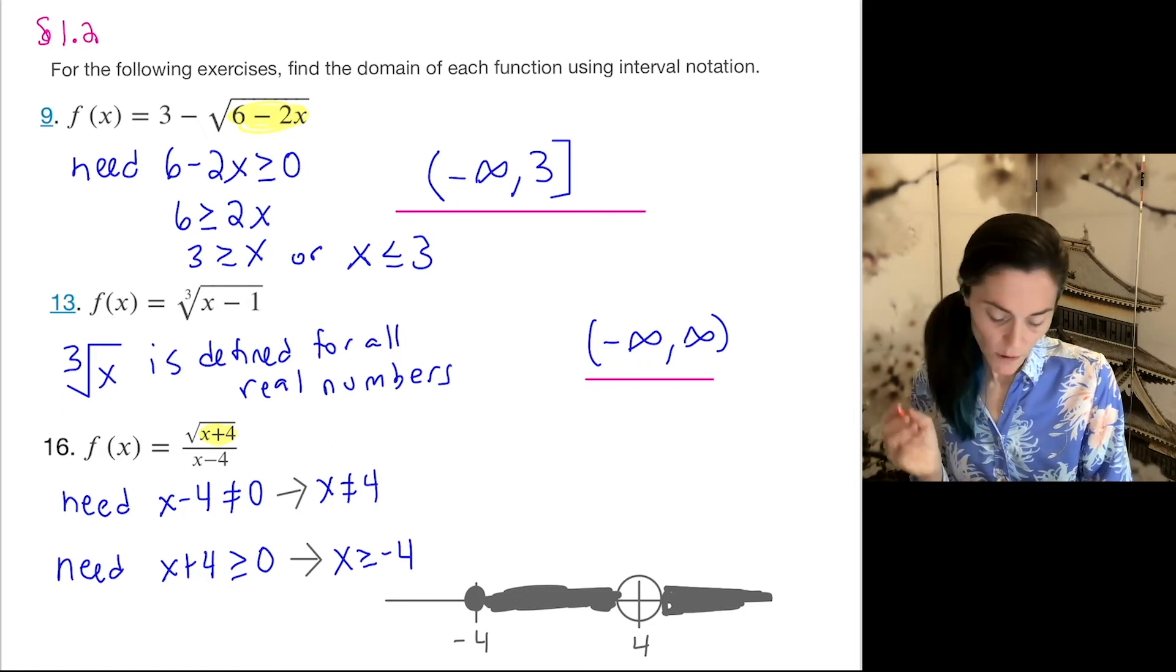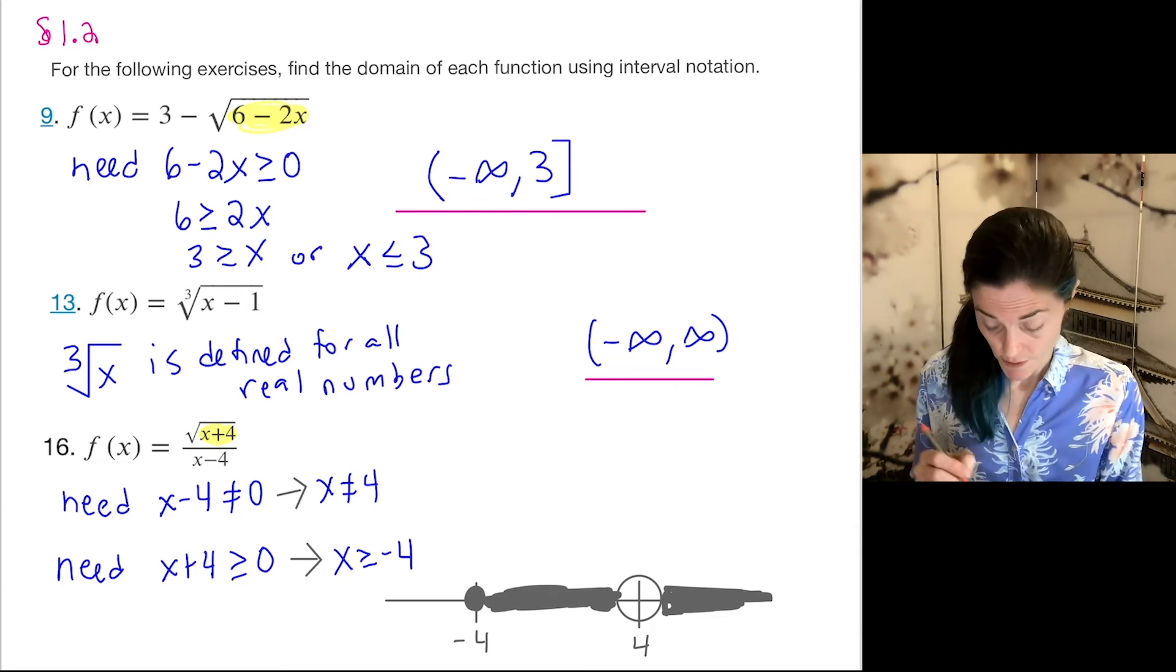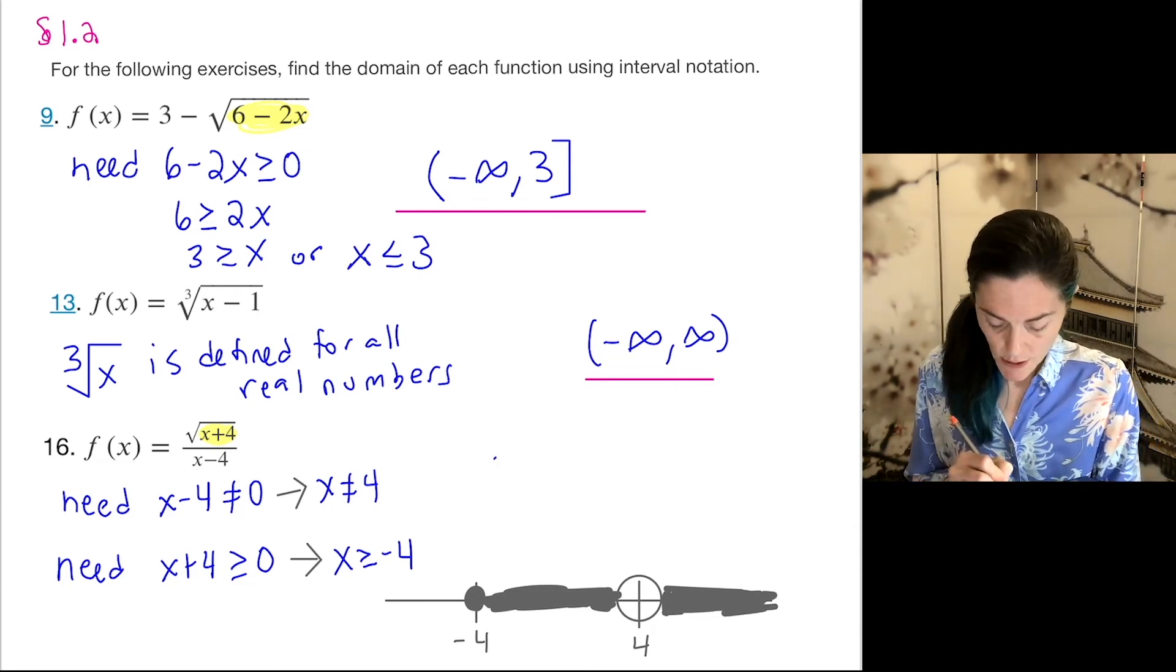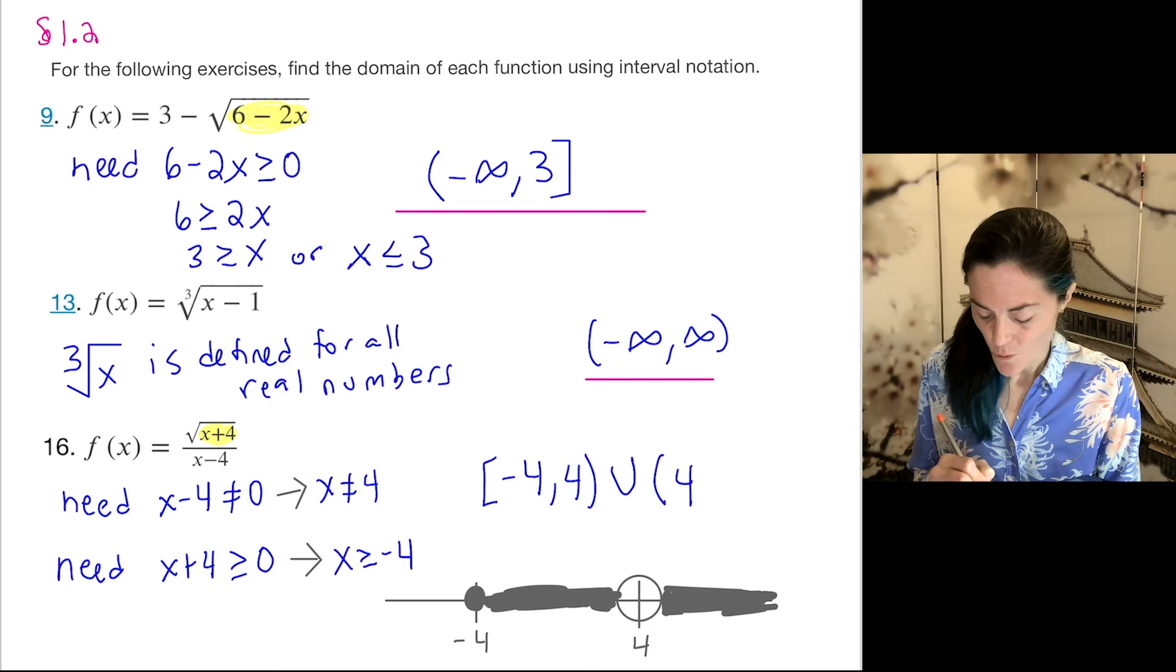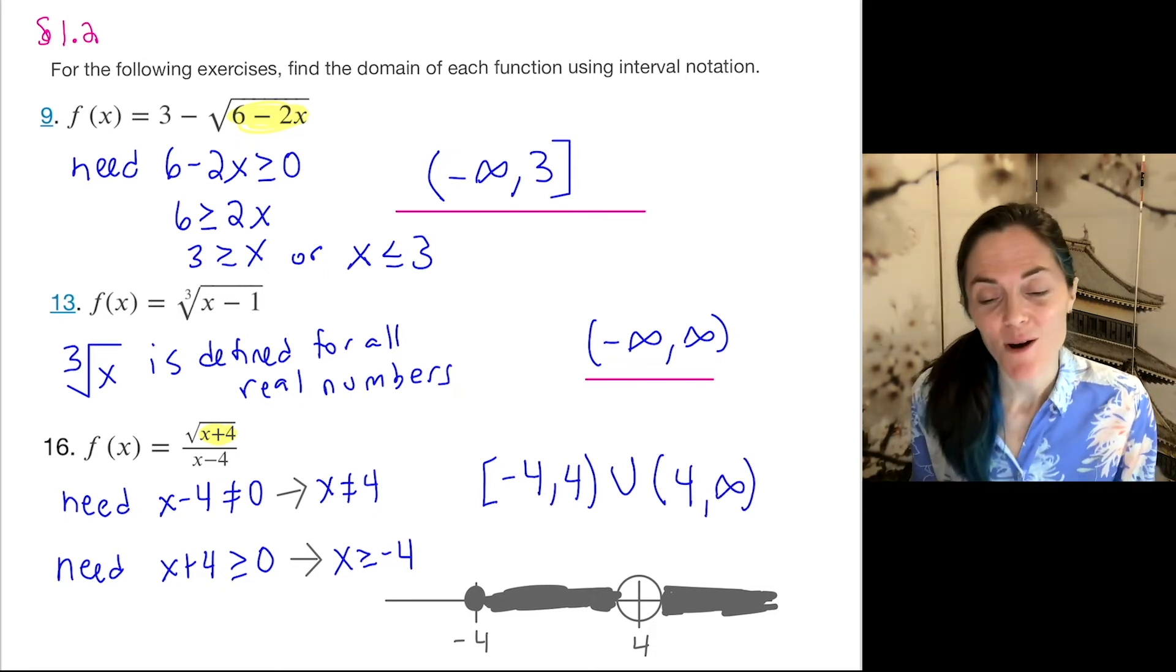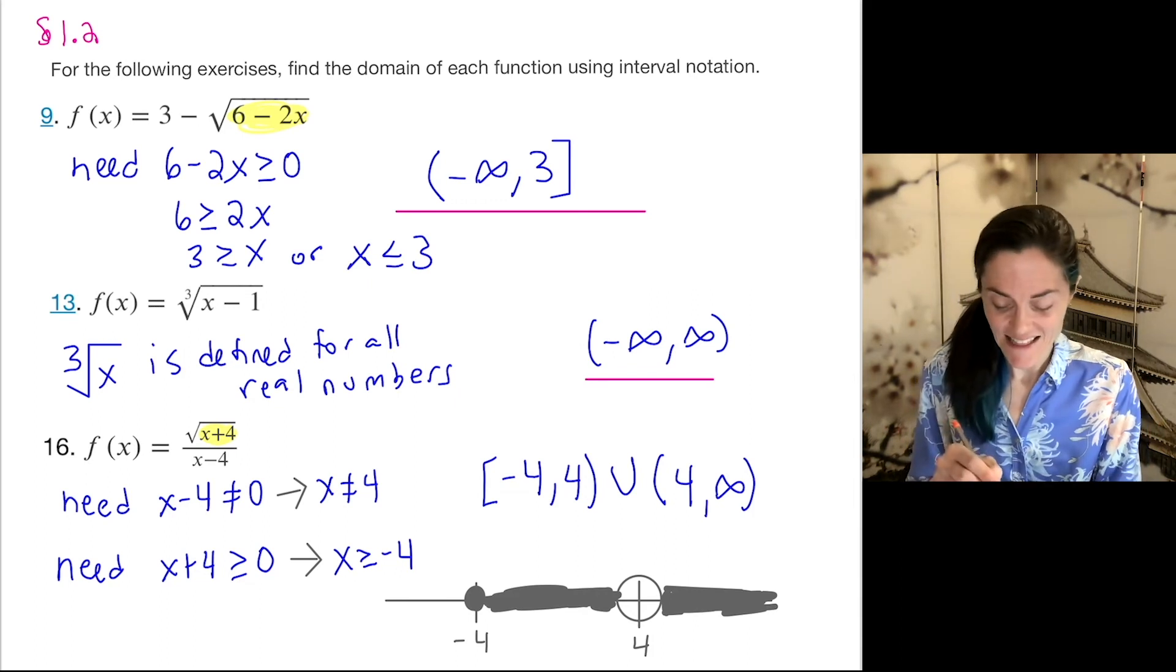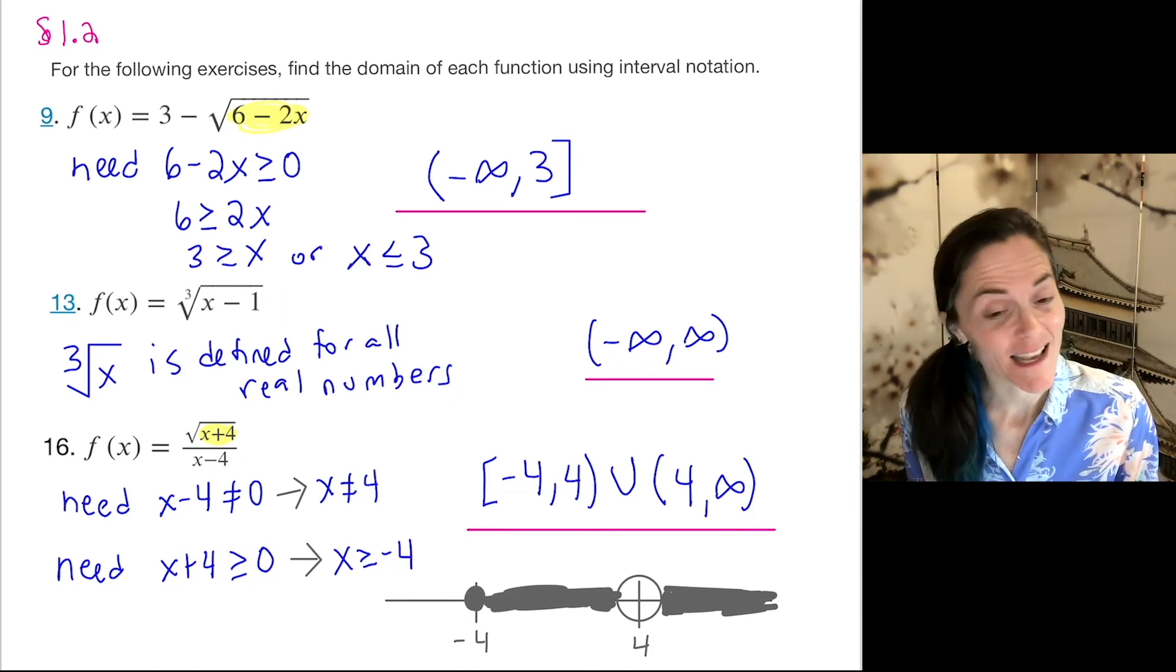So this is what we want here. Now let's write it in interval notation. You see it's going to be the union of two intervals. My answer is closed bracket minus 4 to 4 open parenthesis, union, 4 to infinity. That is what we see below in my number line, and this is my final answer. That was a great example.